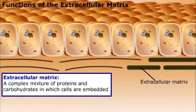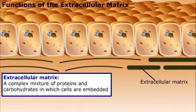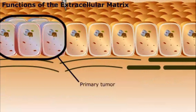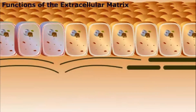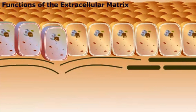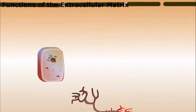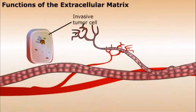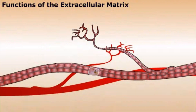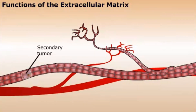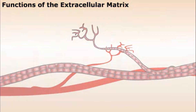Its importance is obvious if we consider what happens when cells don't stick together. Some kinds of cancer can be treated with surgery. But cancer cells don't always stick together like normal tissue cells. They can break through the extracellular matrix and make their way to nearby blood vessels. Once inside the circulatory system, the cell can travel almost anywhere in the body and establish a new secondary tumor.